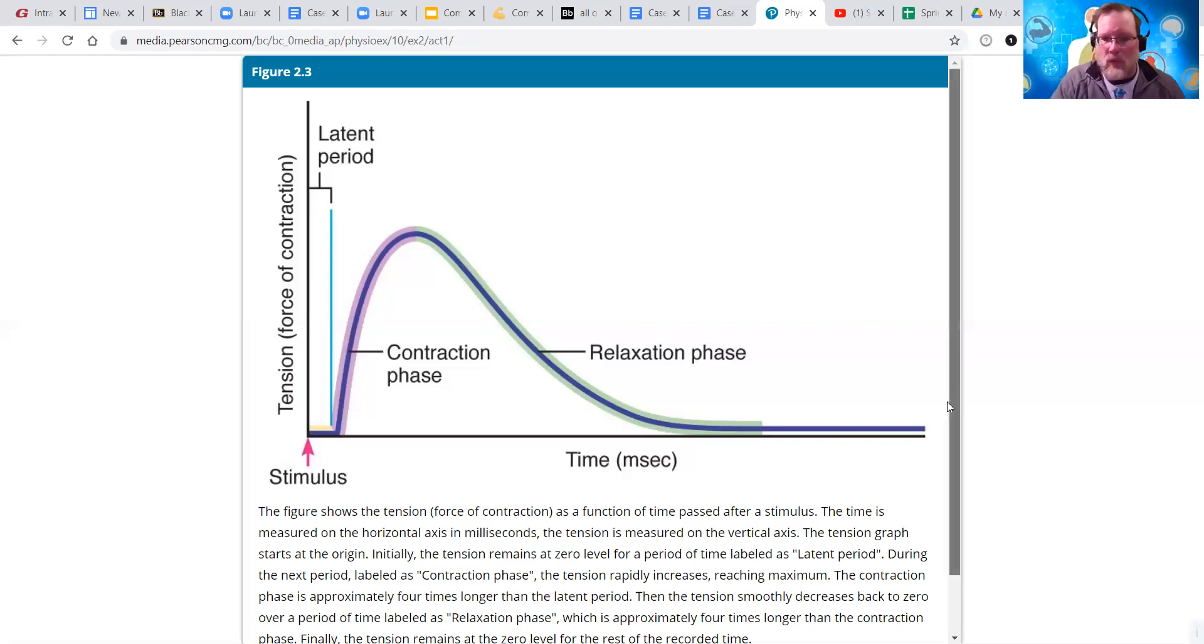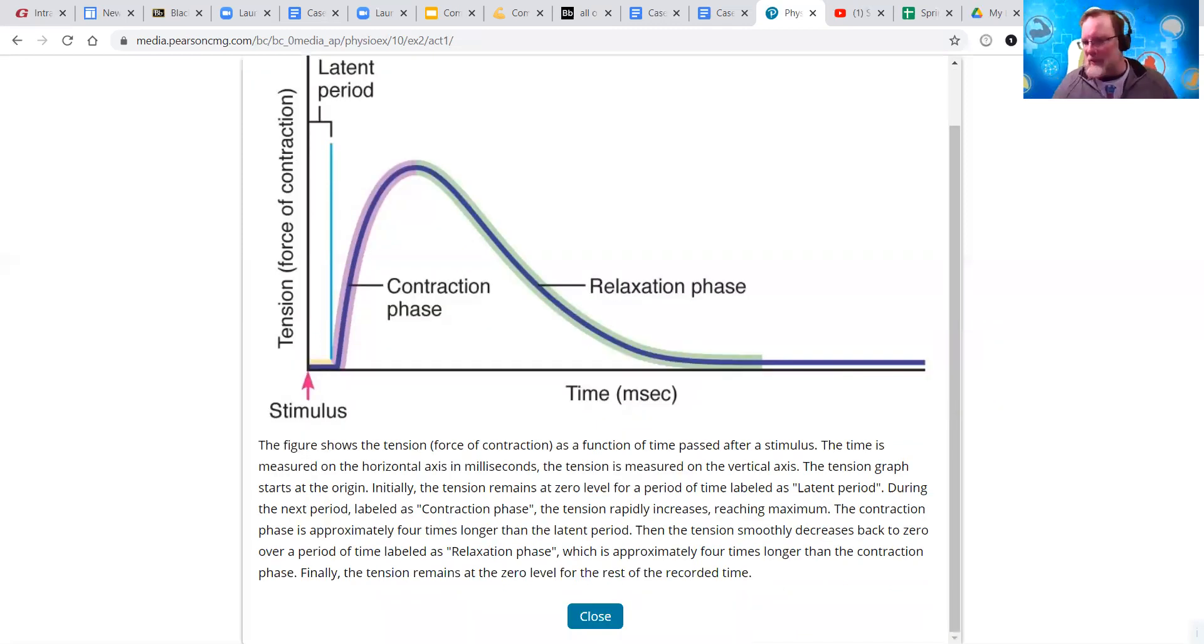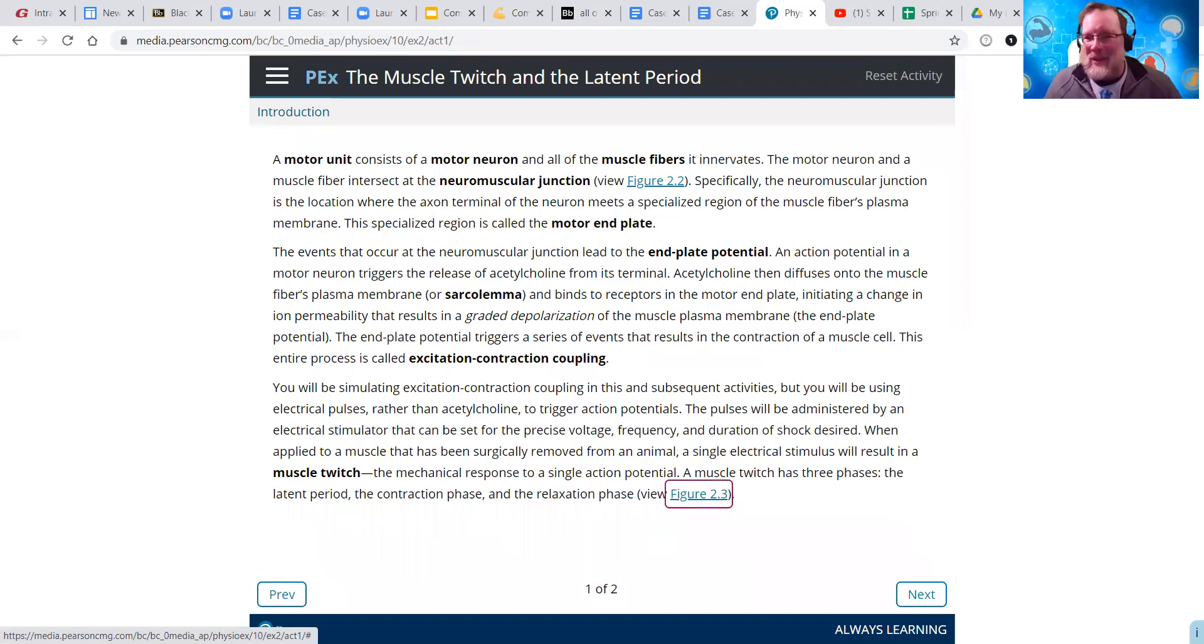One thing we know about muscles is they have the ability to relax and to contract. They have extensibility, flexibility, and stretchability. We call it contractility as well. Just some of the background there.